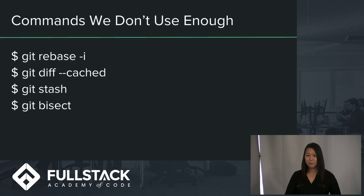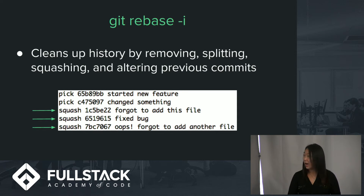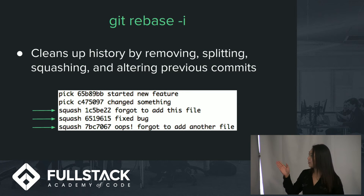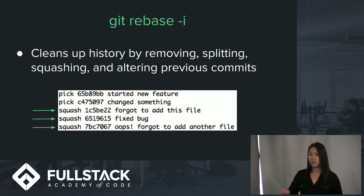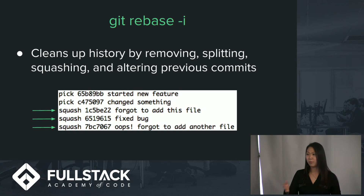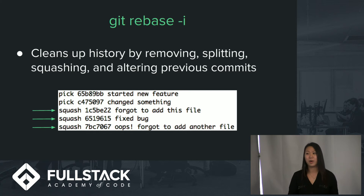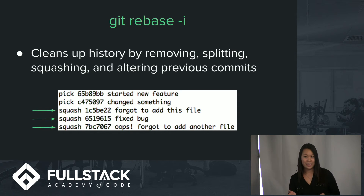A few commands I don't think we use enough that we should incorporate more in our daily workflow. Rebase -i — I stands for interactive — allows you more control over what your project history looks like. Say you made a series of commits, but your last three aren't very useful to future developers reading your work — just you forgetting to commit or fixing a bug. You can go into interactive mode, squash the last three commits into one meaningful commit, and anyone reviewing your history later will see a very clean series of commits that seems really well planned out.